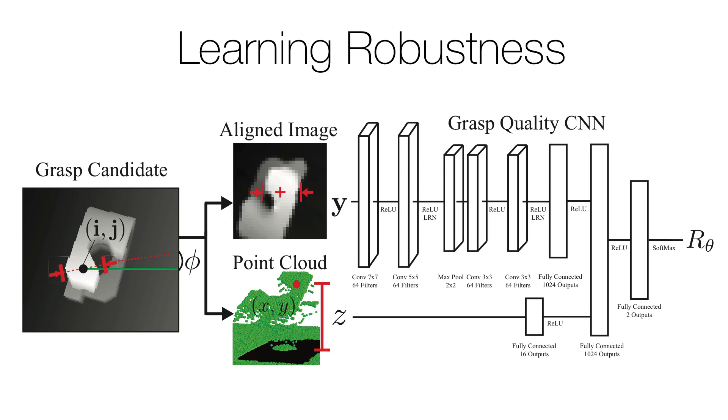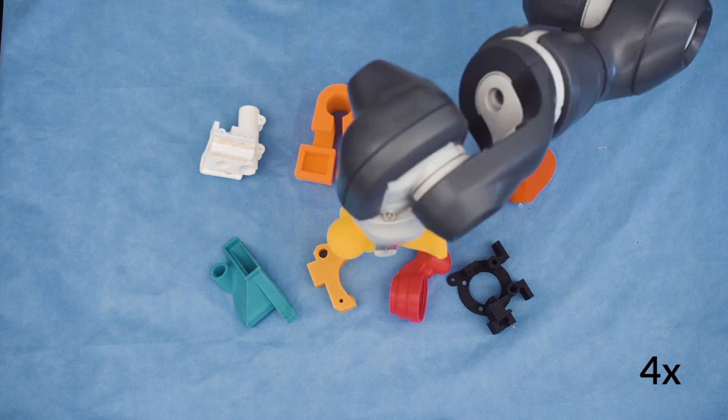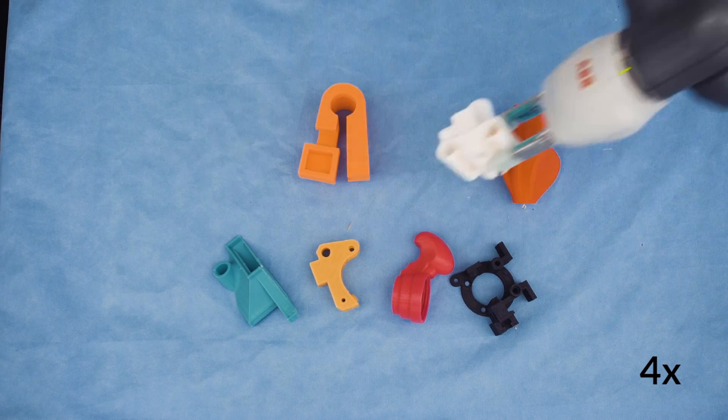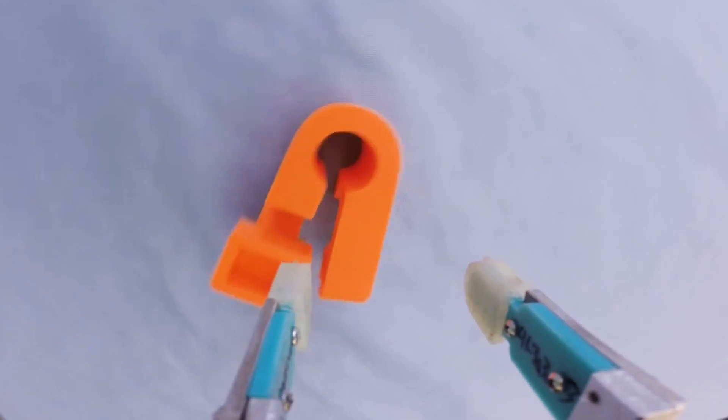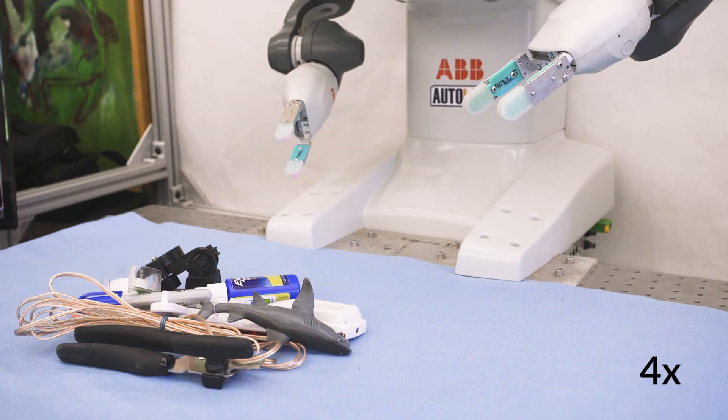The resulting grasp-quality convolutional neural network can rapidly analyze point clouds to find robust grasps. To evaluate DexNet 2.0, we performed physical experiments with test objects not included in the training set.